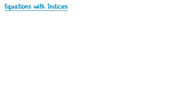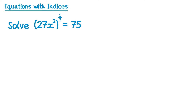Now let's try some questions. We'll start with this one: 27x² all raised to the power one third equals 75, and we're trying to find a value of x. The first thing I notice is we have a bracket to the power one third, so we can use the bracket-to-the-power law.